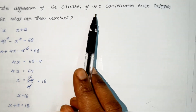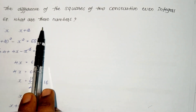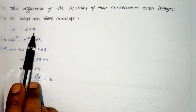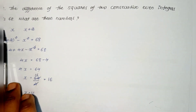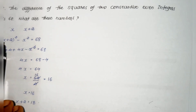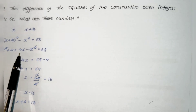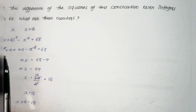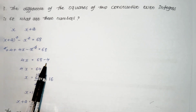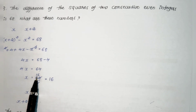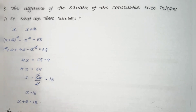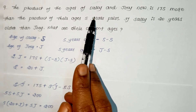The difference of the squares of two consecutive even integers is 68; find the numbers. Let the two consecutive even numbers be x and x + 2. Then (x + 2)² − x² = 68. Expanding: x² + 4x + 4 − x² = 68, so 4x + 4 = 68, giving 4x = 64 and x = 16. The next consecutive even number is x + 2 = 18. So the two numbers are 16 and 18.